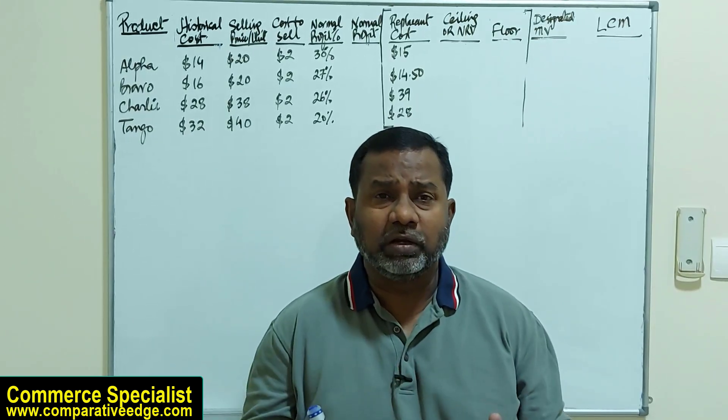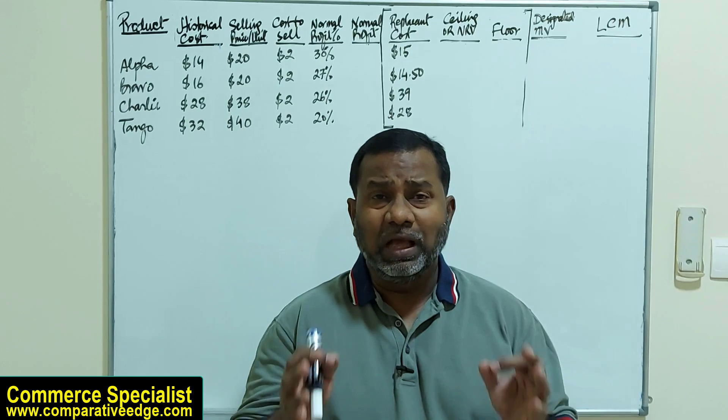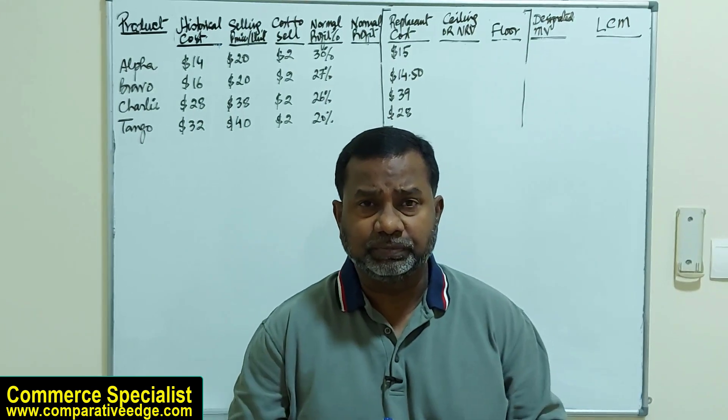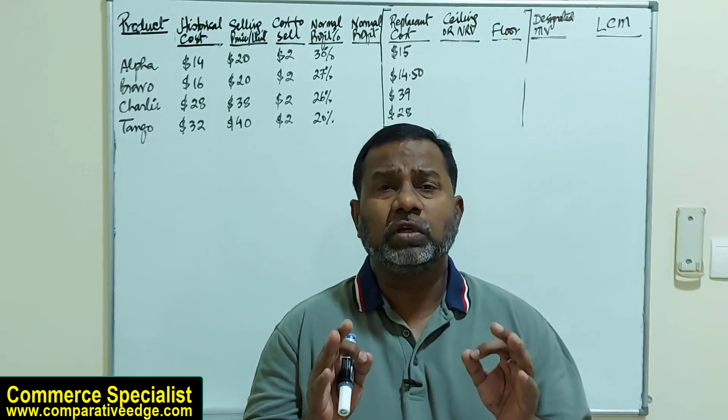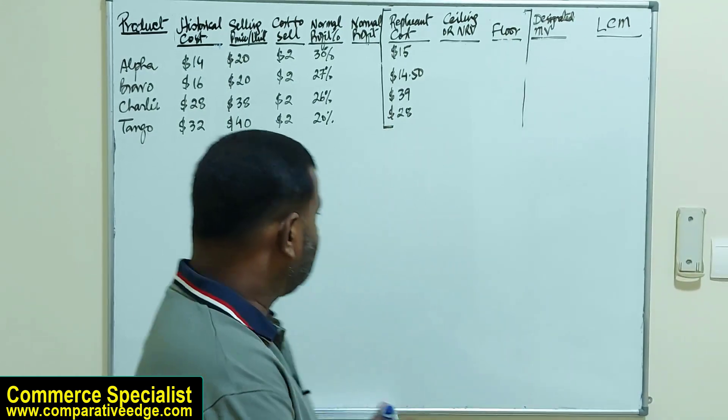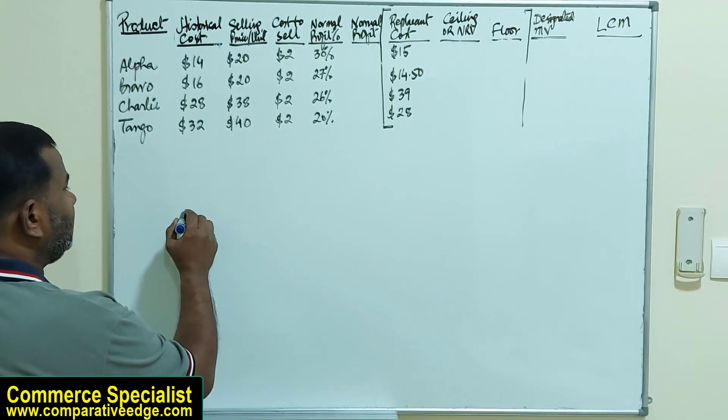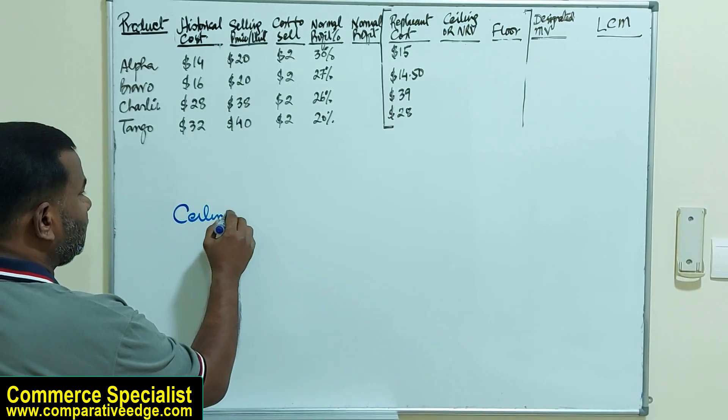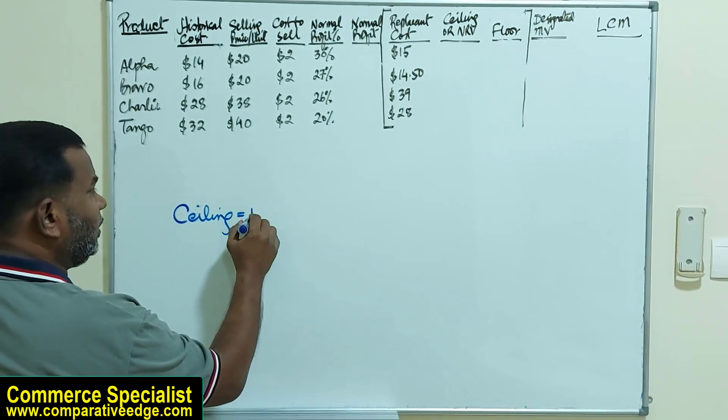Now we are going to discuss how to apply LCM, which is lower of cost or market, when we are talking about LIFO as per ASC 330. First of all, we need to calculate something called ceiling.